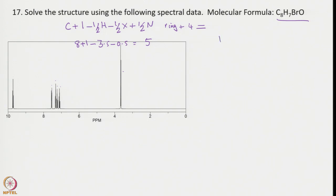Let us write down a proposed structure: a benzene ring with one bromo group. If we consider para-bromo substitution, due to free rotation and the C2 axis, we expect only 4 different types of proton signals — but we have 6 signals in the spectrum. So para-bromo is ruled out. Let us consider the ortho-bromo arrangement instead.